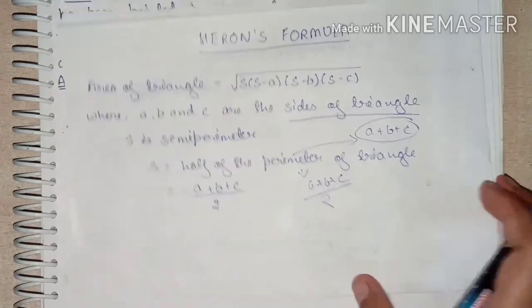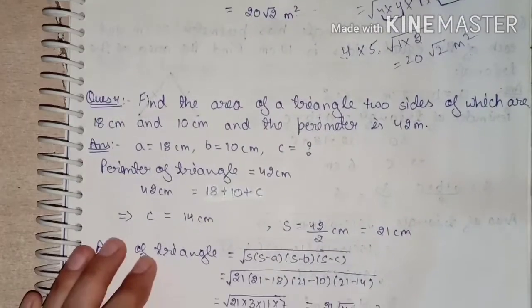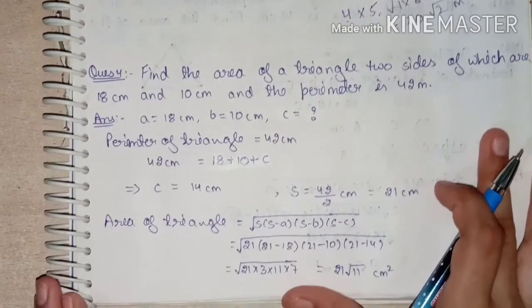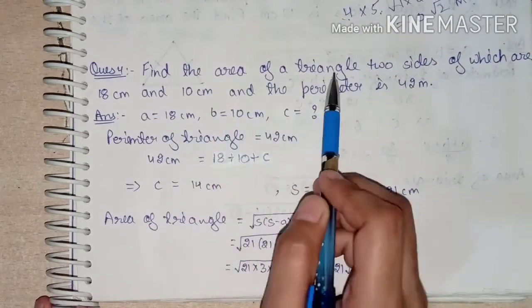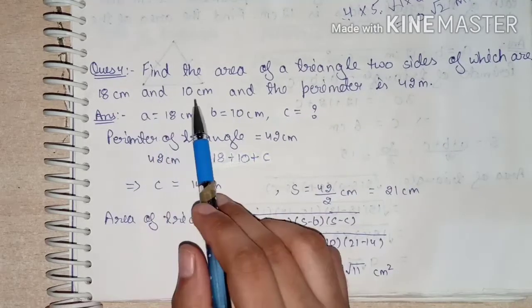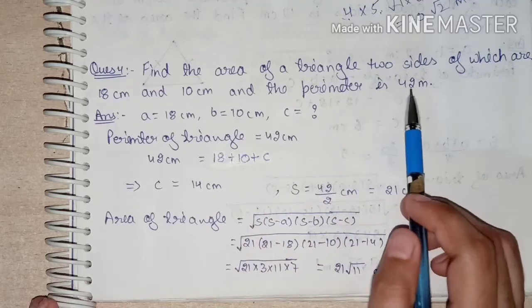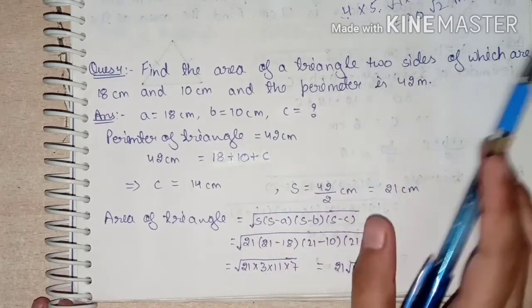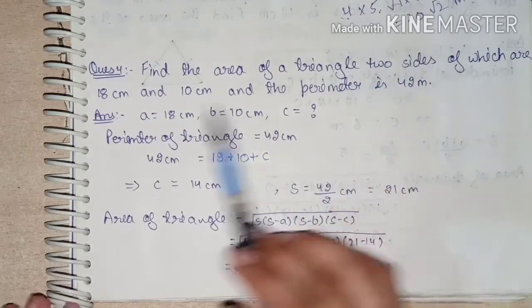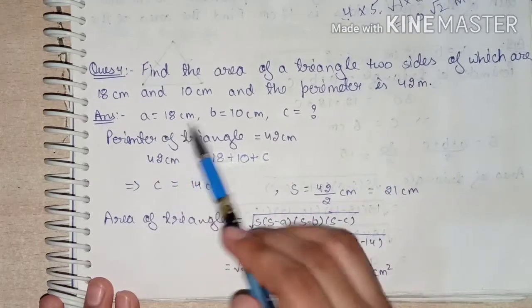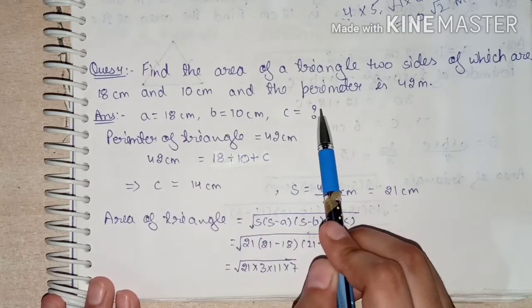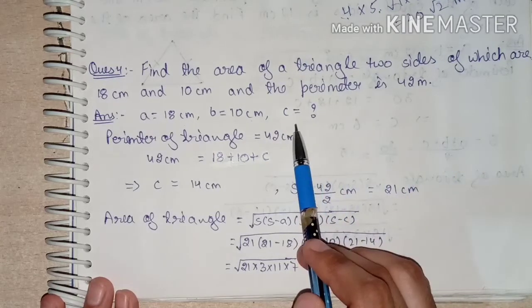Clear. So now let's come to the questions. Question number 4: Find the area of a triangle, two sides of which are 18 cm and 10 cm and the perimeter is 42 cm. Here we need to find the area of a triangle where only two sides are given: a = 18 cm, b = 10 cm. The third side c is not known.